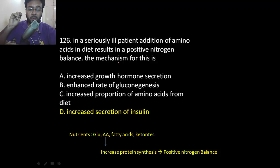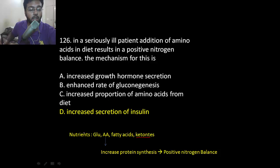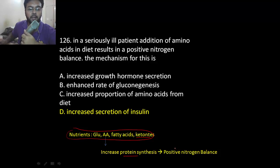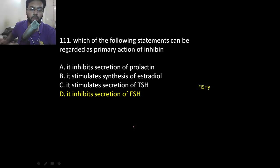In a seriously ill patient, addition of amino acids in the diet results in a positive nitrogen balance. When you provide nutrition — glucose, amino acids, fatty acids, or ketones — that stimulates beta cells to release insulin. Giving amino acids has a positive anabolic effect, results in new protein synthesis, and produces a positive nitrogen balance.